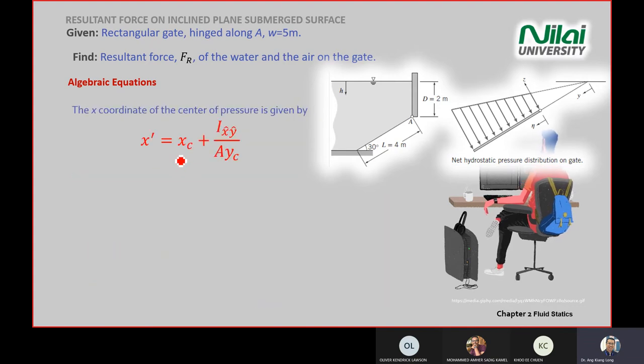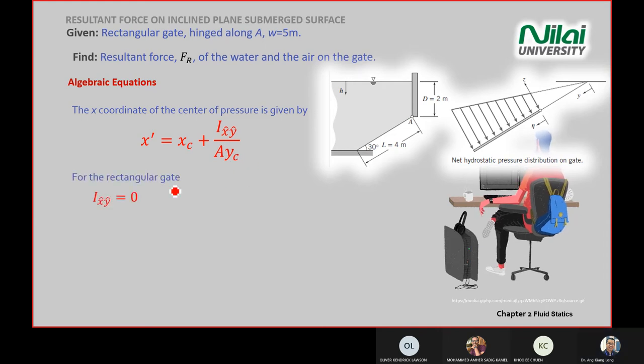So Y prime you'll find already. In this case, I move forward to X prime. Again, X prime we will consider, since we are using algebraic equation, we will focus on the pressure through the centroid, X centroid. So you take the X centroid plus the IXY, the second moment of area again, divided by A Yc. So for again, for rectangular shape, your IXY equals zero. There's no moment created on the X-Y, X plane, Y direction. X plane, Y direction.